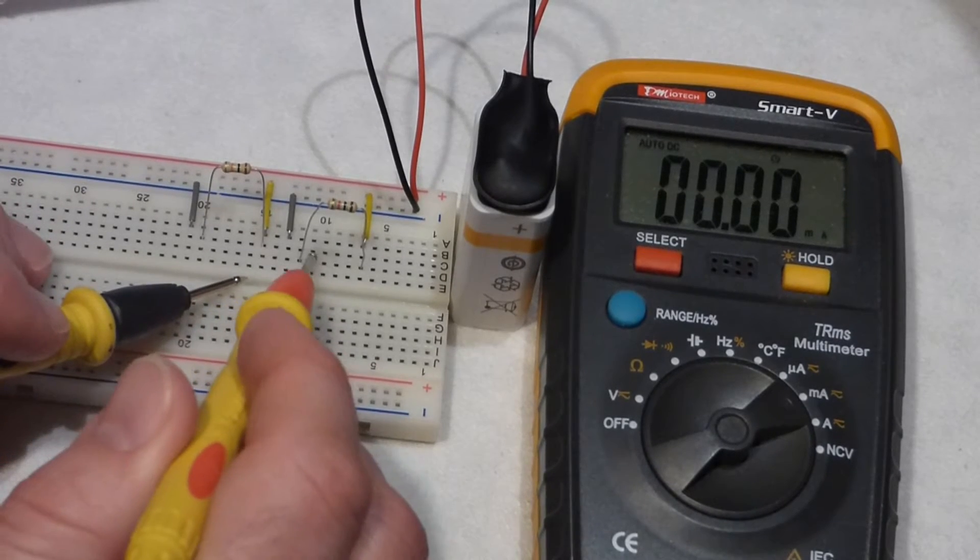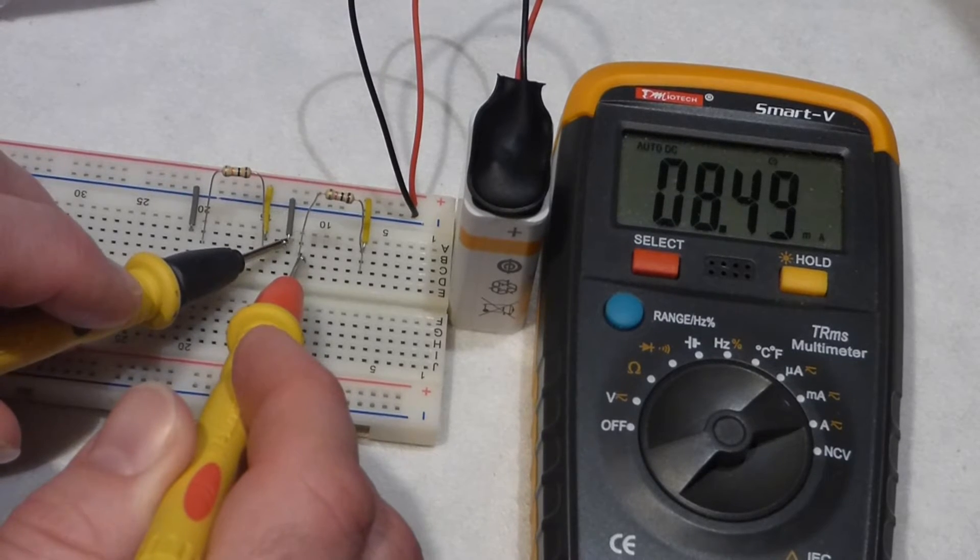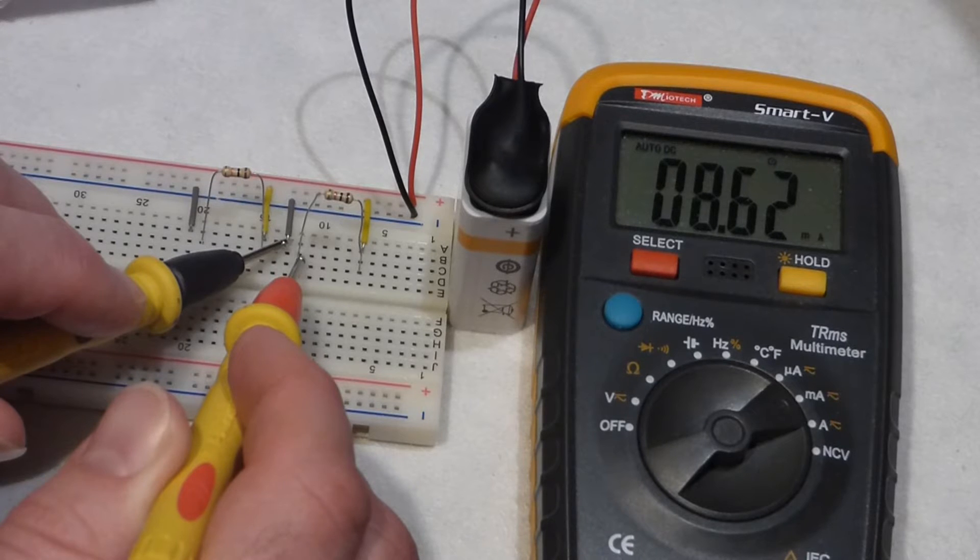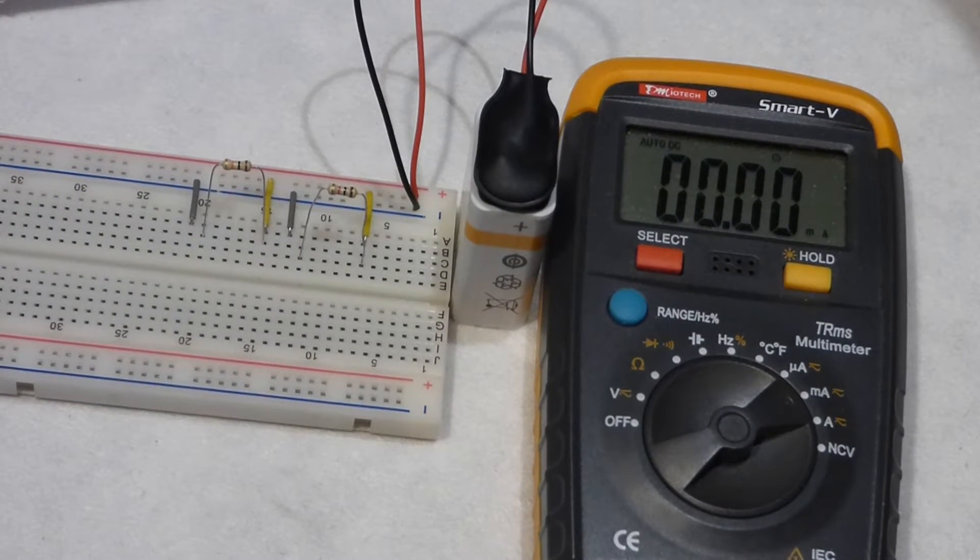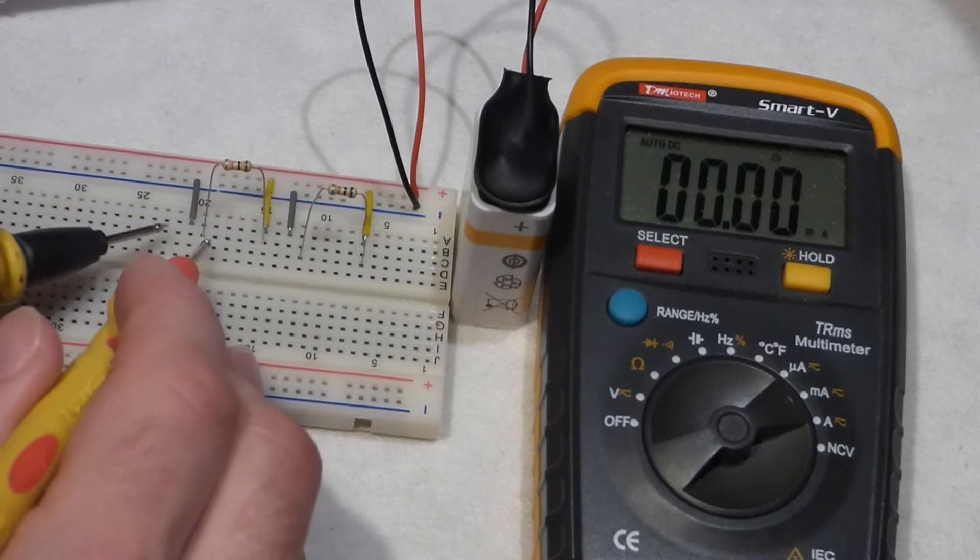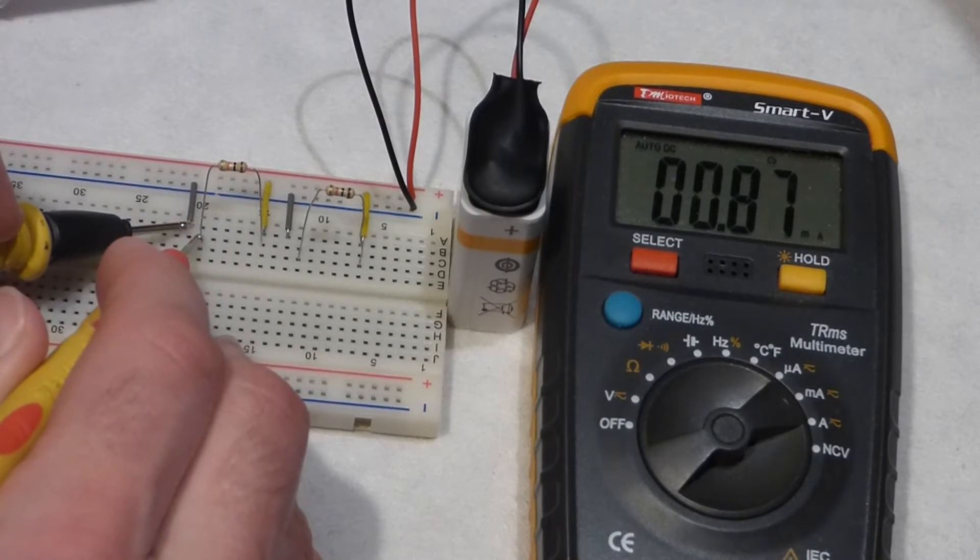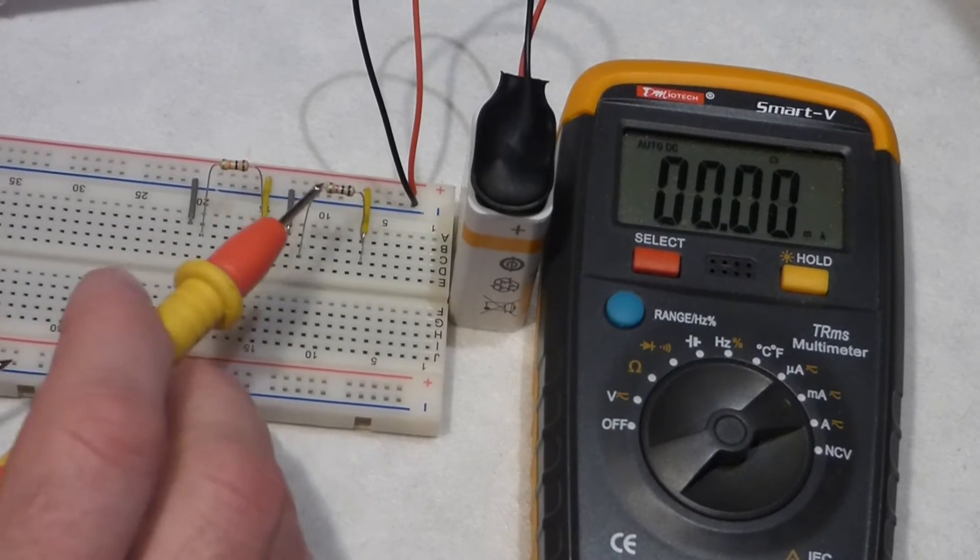First thing we're going to do is measure how much current goes through this resistor. And you see it's about 8.7 milliamps.